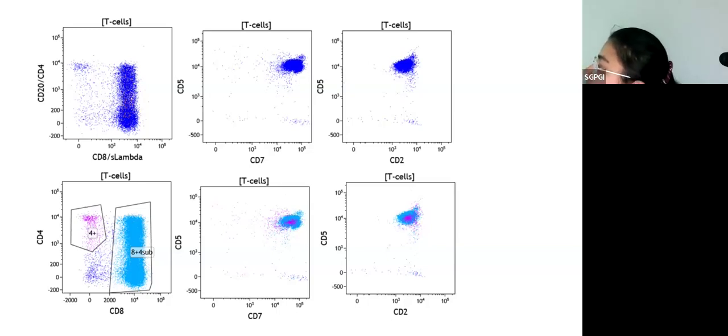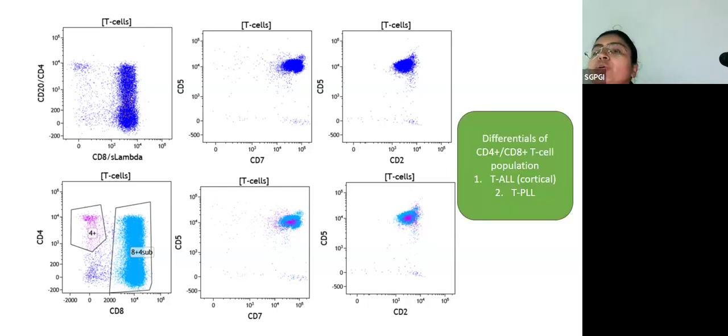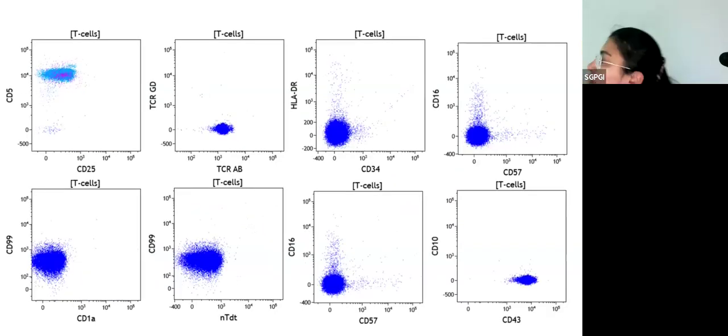What about CD4 and CD8 on the T cells? They appear to be CD8 positive, but there is definitely a subpopulation that is co-expressing CD4. These particular cells, the CD4 positive as well as the CD8 positive population, which expressed or did not express CD4, everything was gated and you see that CD2 and CD5 are nicely positive. Differentials of CD4 positive, CD8 positive population are T-PLL and T-ALL. We tried to rule out T-ALL. You look at CD99, CD10, TdT, everything appears to be negative. These cells expressed TCR alpha beta. They were also negative for CD34 as well as HLA-DR.